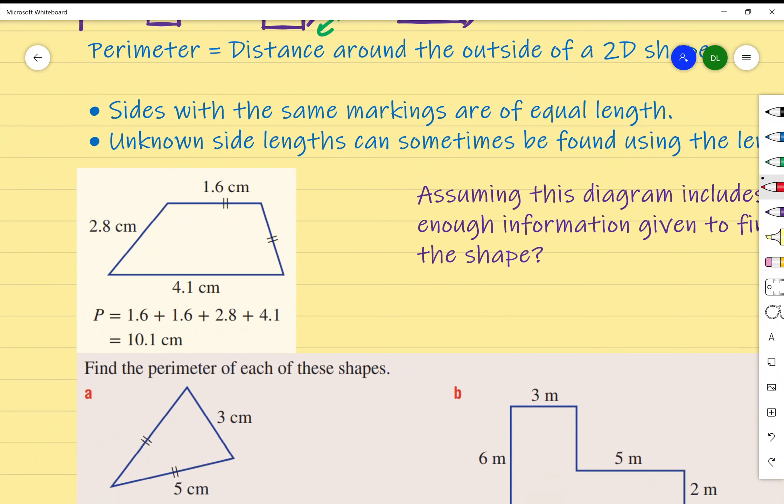This is an example of perimeter. We've written out each individual measurement: 1.6 plus 1.6 again because the same markings means the same length, and we add 2.8 and add 4.1, which gives us 10.1 cm. We add the different side lengths together to get the perimeter. The example I like to give is: what length of a fence do you need to go around a farm?